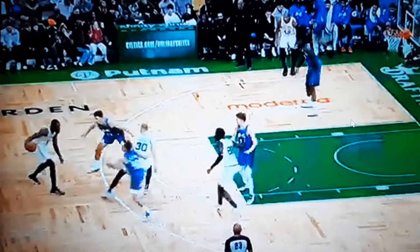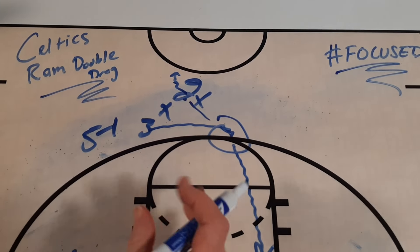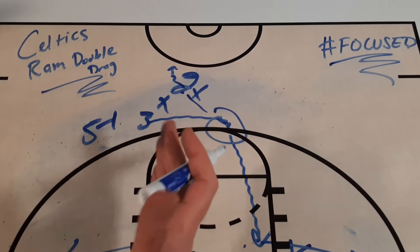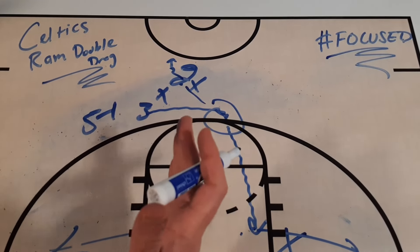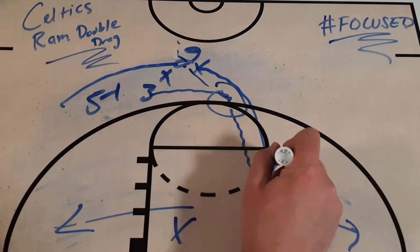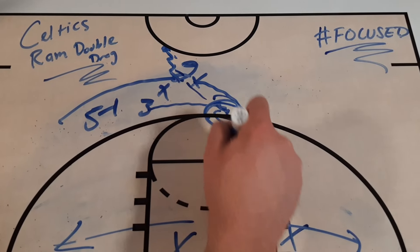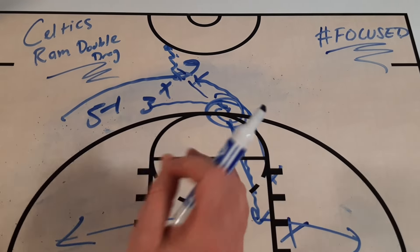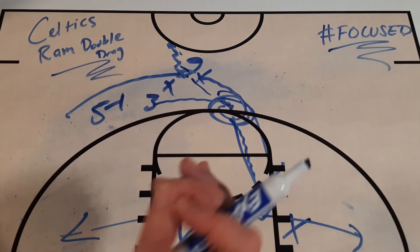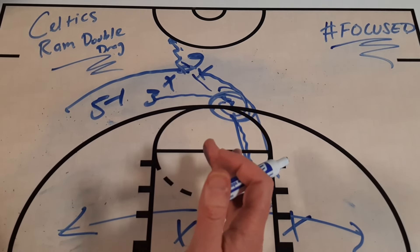This is why the Celtics are so difficult to defend — they're making the right decisions consistently on possessions. The Celtics ram double drag is a great action that can be used at all levels. It's really simple and puts players in a position where they have to make decisions. One situation we saw Brown use the screen and take the three; another he rejected and attacked the paint; the last one he retreated his dribble and hit Hauser, who attacked the paint, slow-played it, and scored. That's why they're so difficult to play against this season.